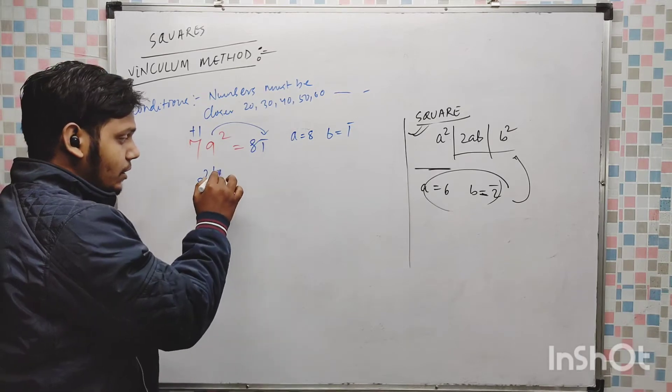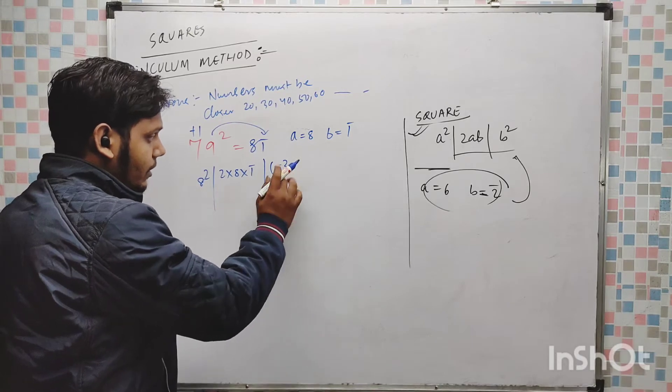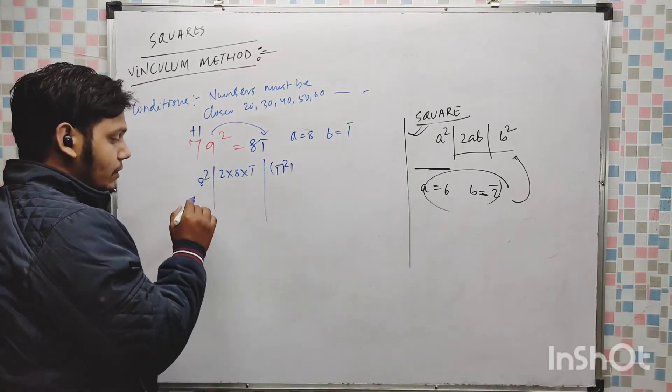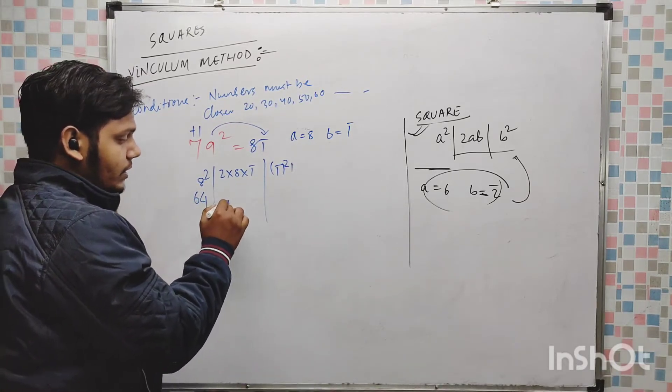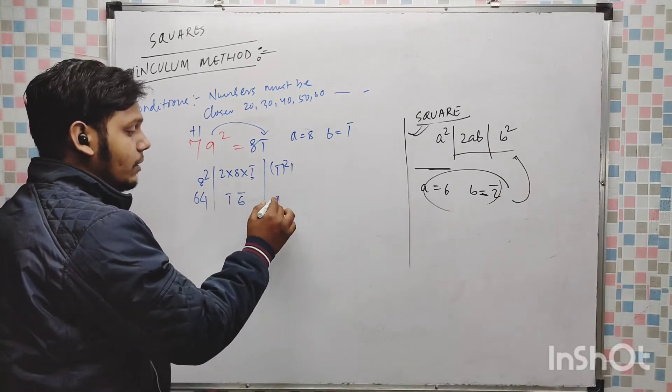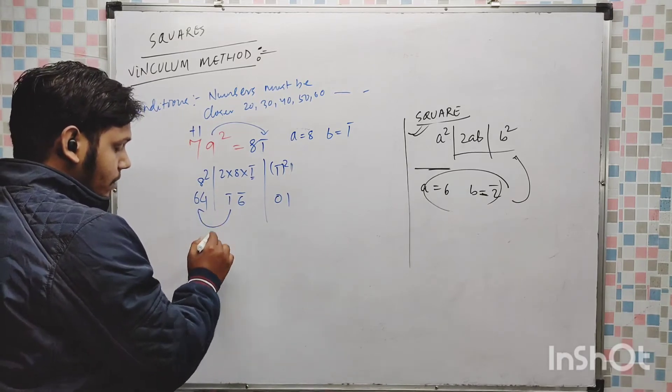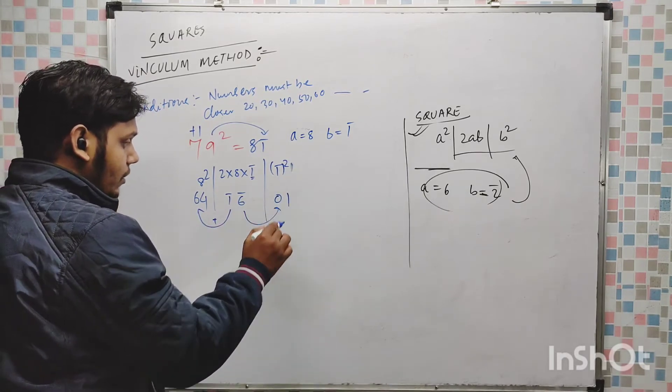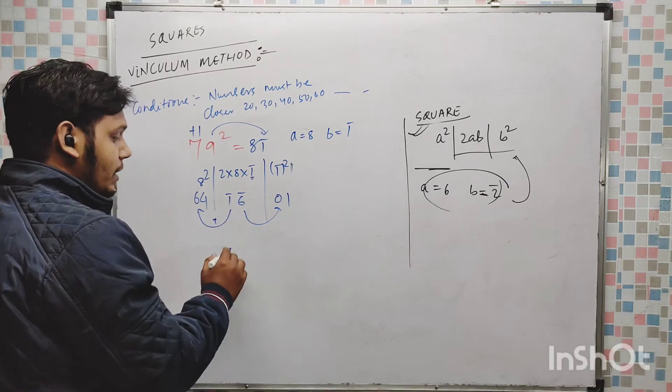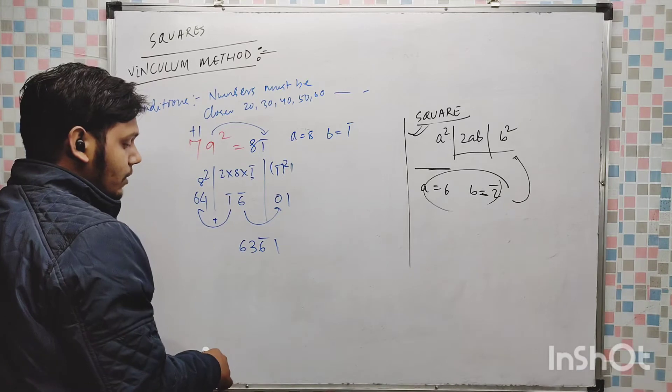8 square, 2 into 8 into 1 bar, and then 1 bar square. So 64, 2 into 16 is 16 and minus 1, minus 16, 1 bar it is 01, 1 bar square. Now the same, here you have to add, 64 minus 1 that is 63, 6 bar and 0 that is 6, and there is 1.